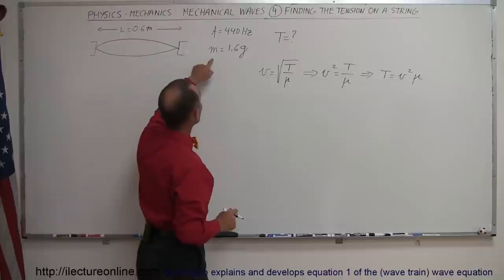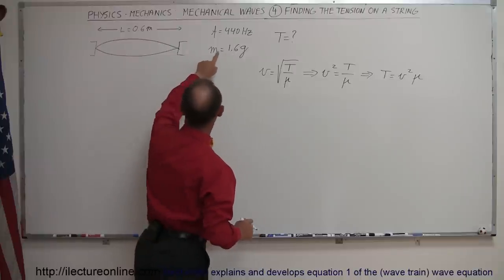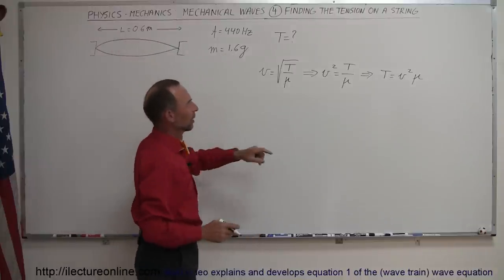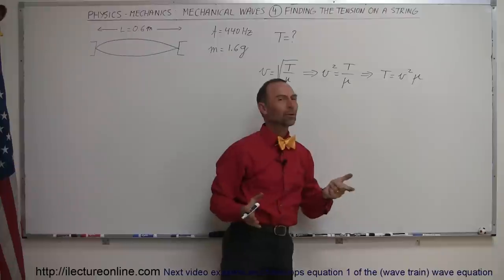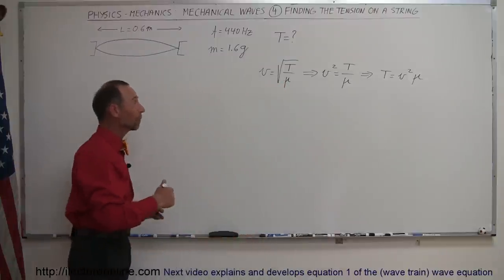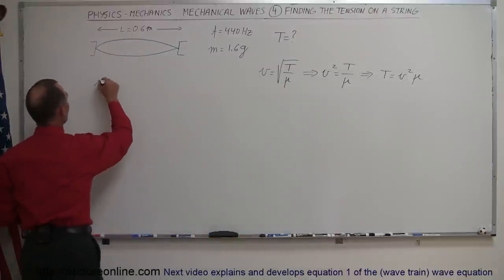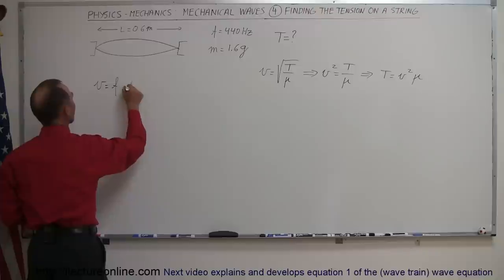Now, the mass per unit length we can calculate because we have the mass and we have the length. So that's straightforward, but now for the velocity, how do we do that? Well, let's go back to our basic wave equation that says that the velocity is equal to the frequency times the wavelength.